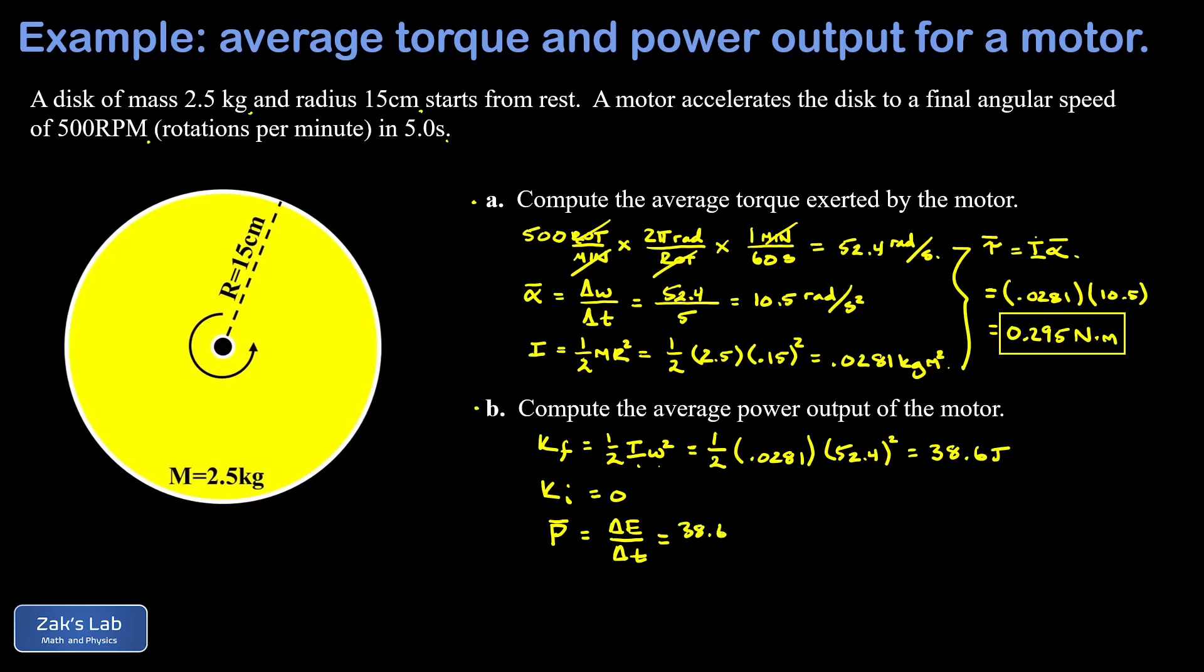And that's 38.6 joules divided by the five seconds that it took to transfer to the disc, and this gives us an average power output of 7.72 watts. And that's it! If you enjoyed this video or at least found it useful, check out another one by clicking one of the links on the left or click the Zak's Lab logo on the right to explore dozens of physics and math playlists.